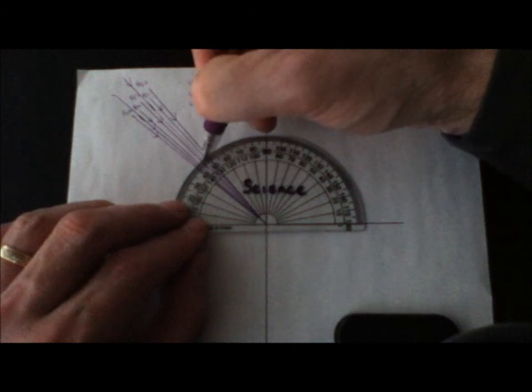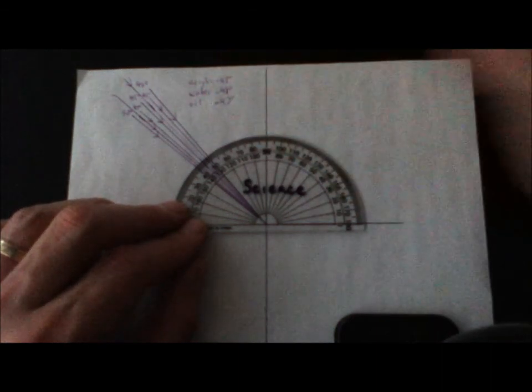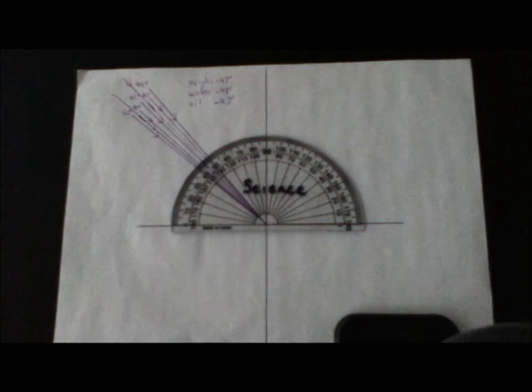So it's probably, let's see here, that's 40, 41, 42, 43. Around 43 degrees is where we see the critical angle for oil.